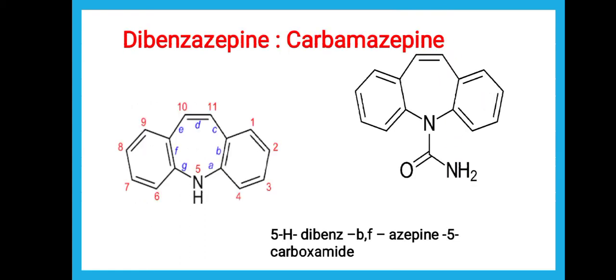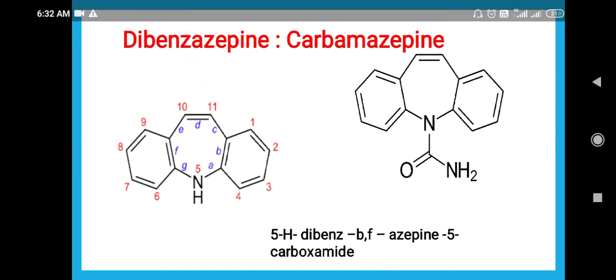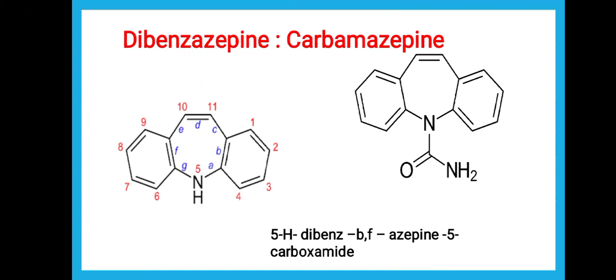To start with, dibenzazepine — that is carbamazepine — we will first cover the parent nucleus, i.e. dibenzazepine. As the name suggests, dibenzazepine is nothing but 2 benzenes, and azepine is a 7-membered ring containing nitrogen. As you can see in the structure, this is one benzene ring, this is another benzene ring — so this is dibenzazepine.